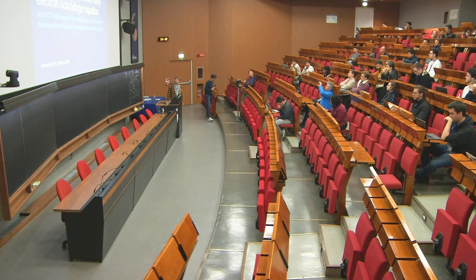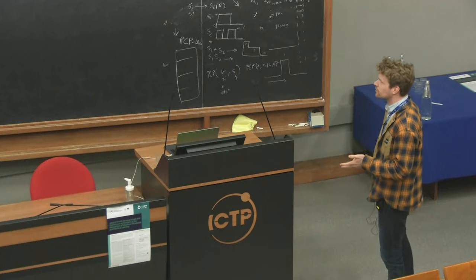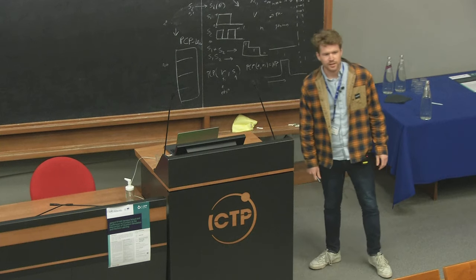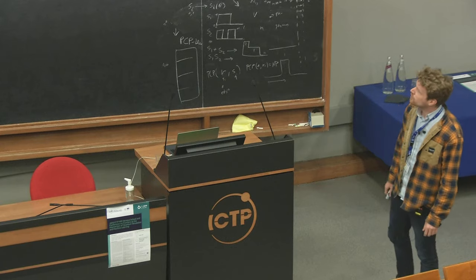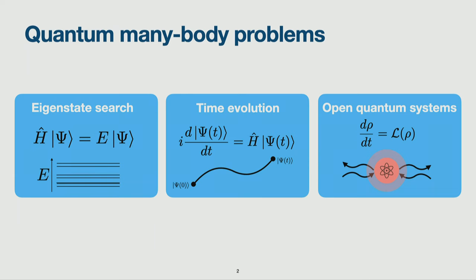Thanks to the organizers for this workshop. What I want to talk about is three different projects that I'll try to combine into these 30 minutes. I'm focusing on developing methods for ab-initio Hamiltonians and specifically electronic degrees of freedom. The three projects cover what I think are the big pillars of quantum many-body solvers: eigenstate search, time evolution, and open quantum systems, including time evolution within open systems.